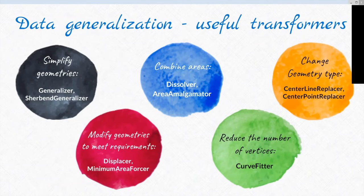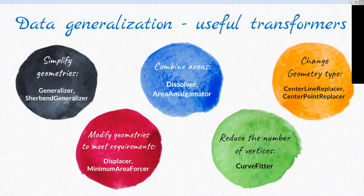Sometimes we have to modify geometries to meet requirements. Before we move on, we've got a little poll to see if people are using these transformers — the generalizer, Churband generalizer, dissolver, area amalgamator, center line replacer, center point replacer, displacer, minimum area, and curve fitter. We'll show a couple of examples. The curve fitter is an extra-cost plugin for FME.